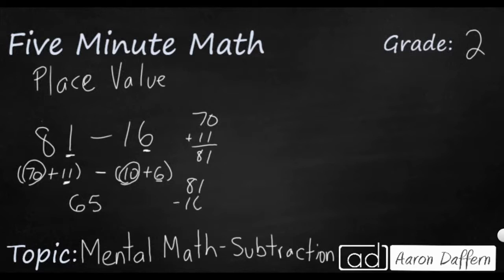81 minus 16. I have to regroup. And see, that's what I just did. 11 minus 6. So that's just what I did mentally over here. And so that's going to be 65. Now let's look at one final example. And we're going to use a strategy called compensation.